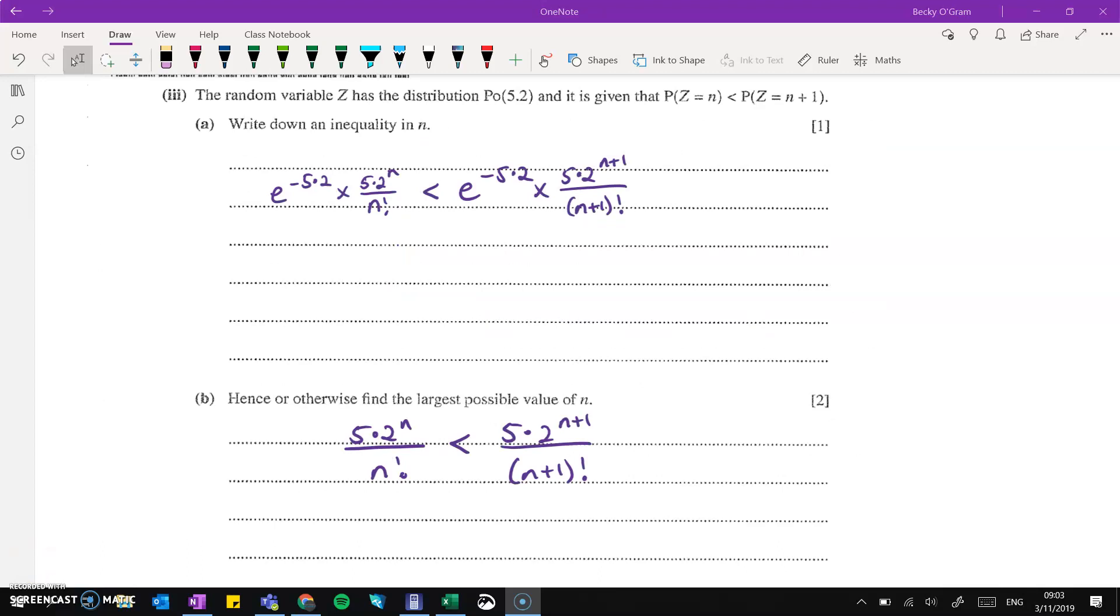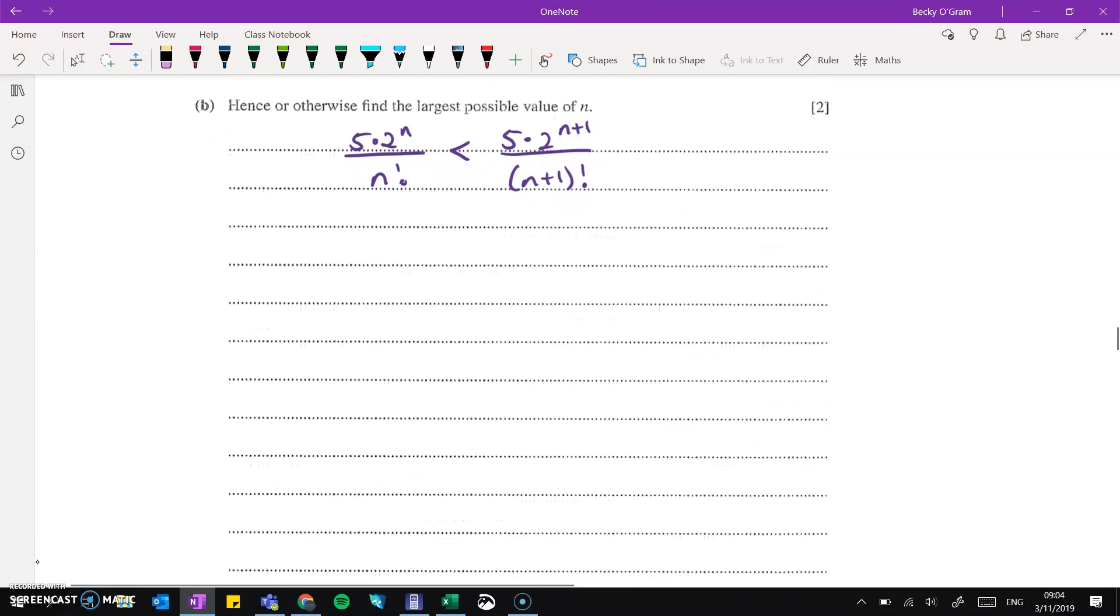Then one step further, we're given some general things about this Poisson distribution. And we're given things in terms of n instead of numbers or working out lambda. So the probability that z equals n, just put that into the formula for the Poisson distribution with our x value being n. And the same for n plus 1, put that into the formula. And we're told that this one is less than this one. And then part b asks us to actually go on and solve that for n. And I'm going to step through this one because it does take a little bit of thinking about with all those factorials going on.